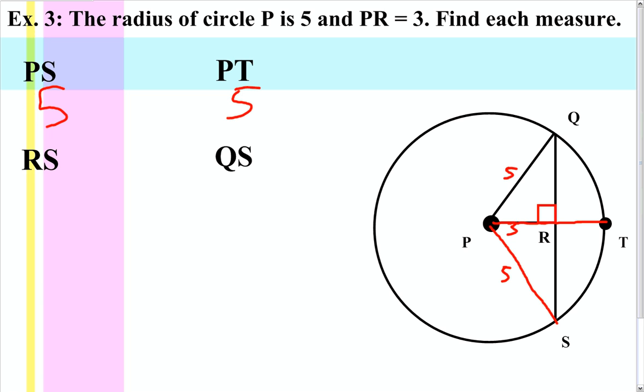Now if I find segment RS, although the radii is perpendicular and bisects the chord, we do not know anything about the chord. We do, however, have a right triangle, which means we can use the Pythagorean theorem to find the missing leg.